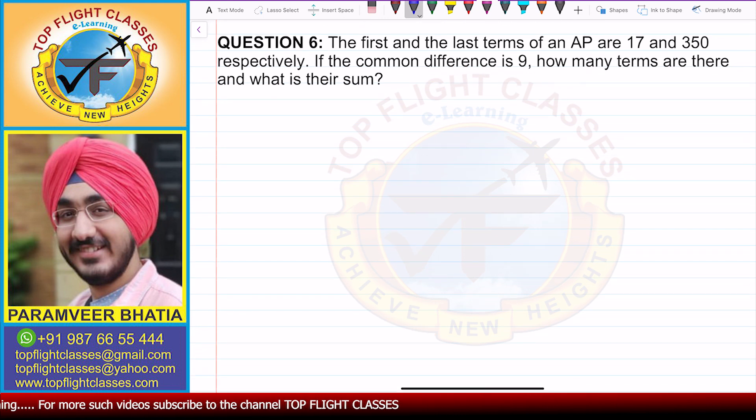So here we have first term, A, given to us as 17, and last term, AN, given to us as 350. Now, common difference is 9 in this case. So D is given to you as 9.